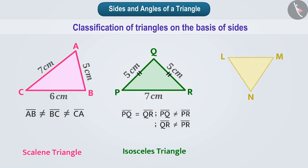Now if we talk about triangle LMN then it has LM equal to MN equal to LN equal to 5 cm. That is, all 3 sides are equal. A triangle whose 3 sides are equal is called an equilateral triangle.